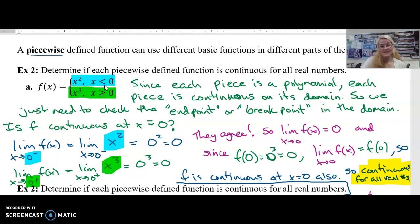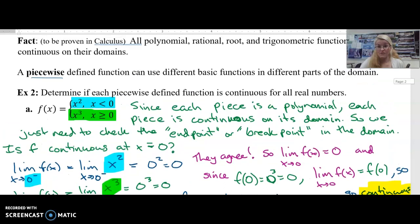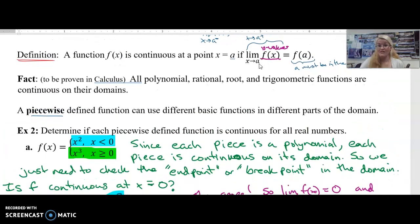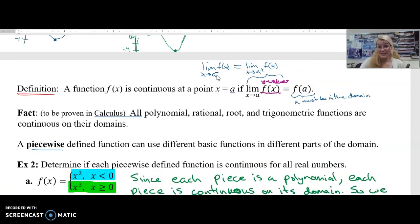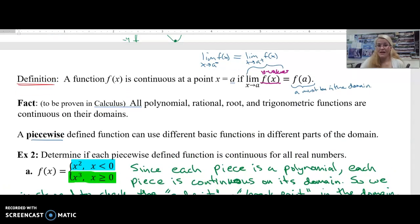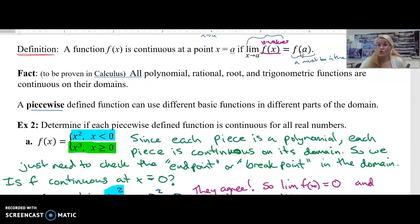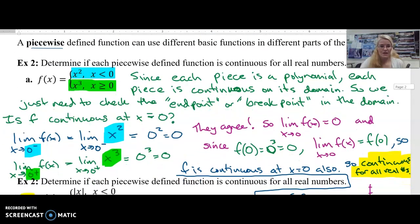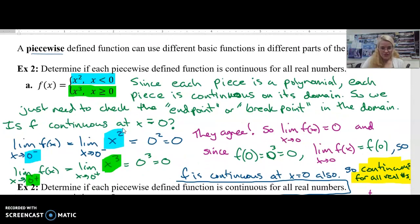So the only thing we need to worry about with this piecewise function is the end point or the break point in the domain. Where is my domain being broken up? At zero. Because for all the x values less than zero, I'm looking at a parabola. For all the values of x that are greater than or equal to zero, I'm looking at my cubic function. So how do we determine if f is continuous at that break point? We look at and use our definition.